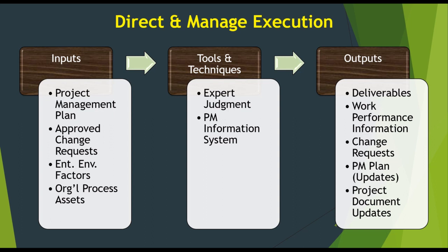There are a lot of essential things that are taken care of during the execution phase. The inputs during the execution phase are: project management plan (PMP), approved change requests, enterprise environmental factors, organizational process assets. Tools and techniques used are expert judgment and project management information system. The outputs are deliverables, work performance information, request for change, updates to the project management plan, and project document updates.